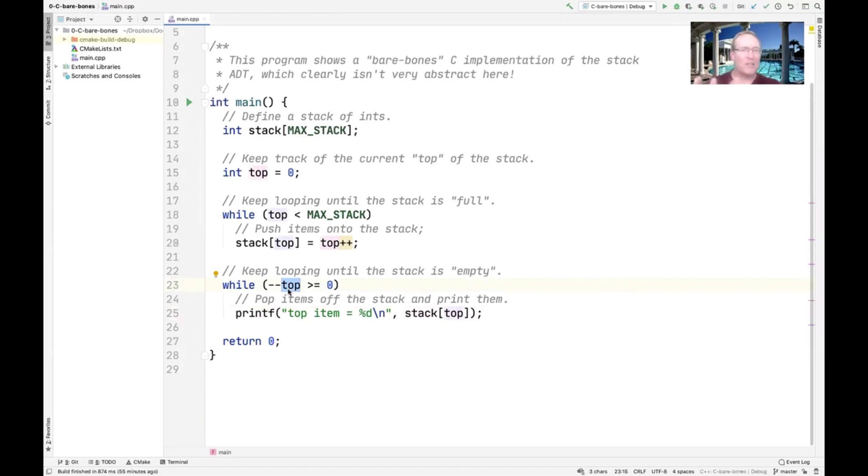We've got all the classic fence post errors. We have to remember to pre-decrement top because it's always one past the end. The current top is really top minus one. And all these details are tedious and error prone to deal with.